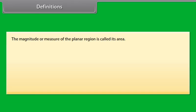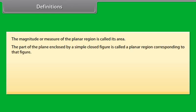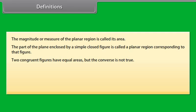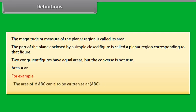Definitions. The magnitude or measure of the planar region is called its area. The part of the plane enclosed by a simple closed figure is called a planar region corresponding to that figure. Two congruent figures have equal areas, but the converse is not true. The area of a figure can also be denoted by AR. For example, area of triangle ABC can also be written as AR ABC.